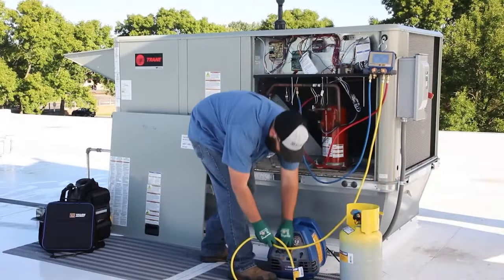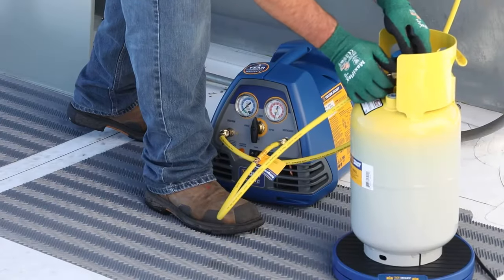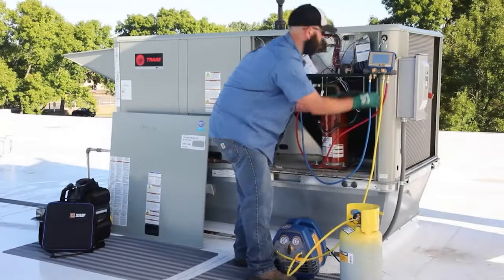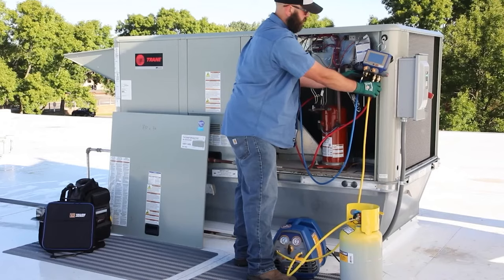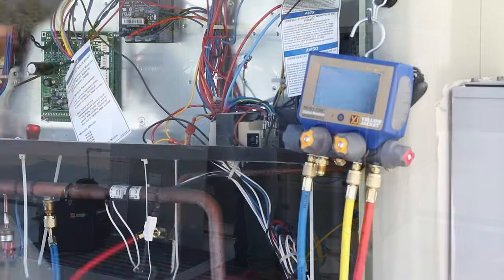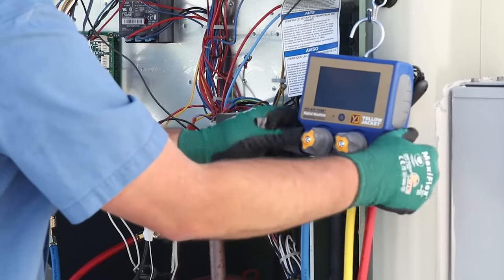Connect the tank hose to the discharge port. It's important to purge the air from the manifold and hoses before starting the recovery. With the tank valve closed, open the manifold valves. The wireless refrigerant scale has an integrated Bluetooth radio that broadcasts its readings to any smart device.